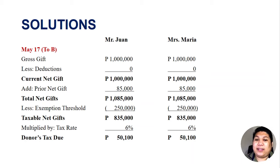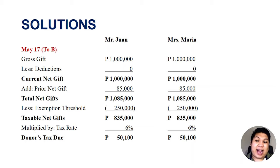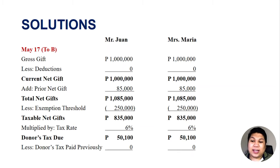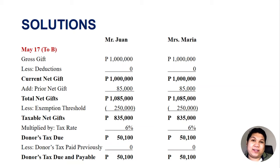Since they have a donor's tax due, Mr. Juan and Mrs. Maria will now file separately. Mr. Juan will pay P50,100 and Mrs. Maria likewise. We deduct any taxes paid previously — but in the donation to A, there was no tax paid because there was no taxable net gift, so we deduct zero. Therefore, the donor's tax due and payable is P50,100 for each.